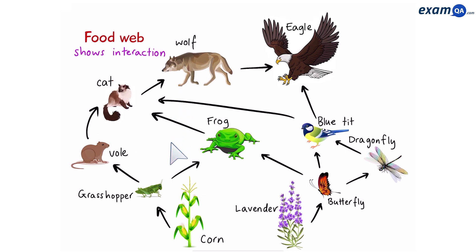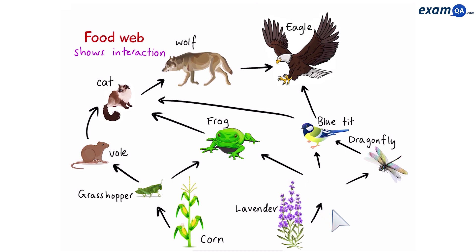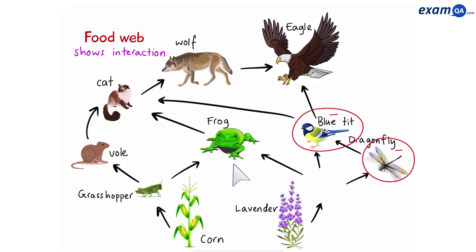Let's try another example. What would happen if we were to remove the butterflies from the food web? Without the butterfly, the dragonfly would no longer have anything to eat, so the number of dragonflies would decrease. If the dragonflies decrease, that means the blue tit would also decrease, because it only eats the dragonfly. Now, you might think the frog might also decrease — well, it will, but not as much, because the frog can now start eating more grasshoppers.